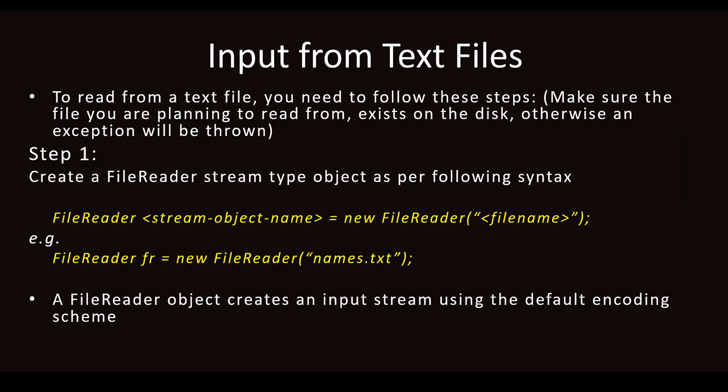If you are going to retrieve some file, make sure that file is available. You have to first create the file, store the data into it, and then retrieve it. Step 1 is to create a FileReader stream type object as per the following syntax. Previously we saw FileWriter; here you are going to use: FileReader object_name = new FileReader(filename).